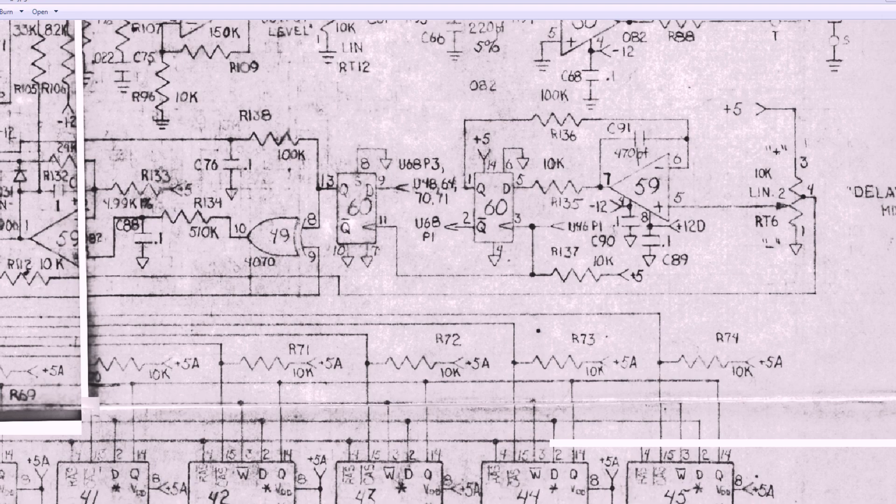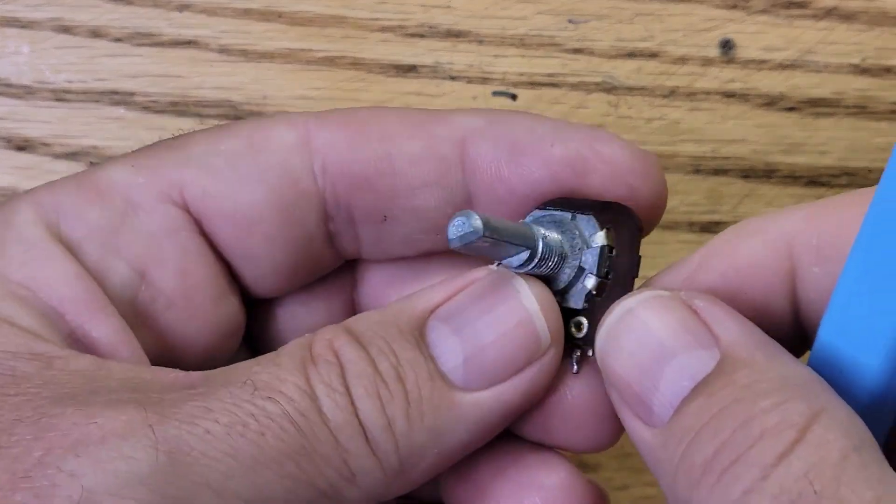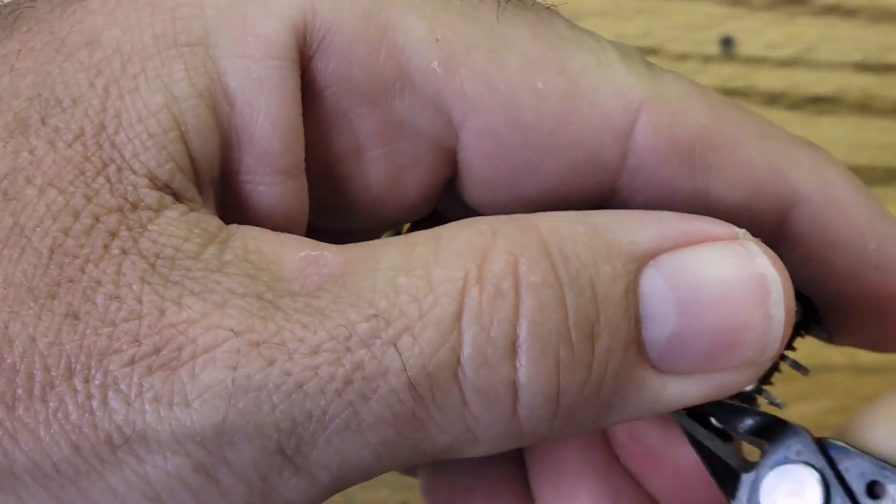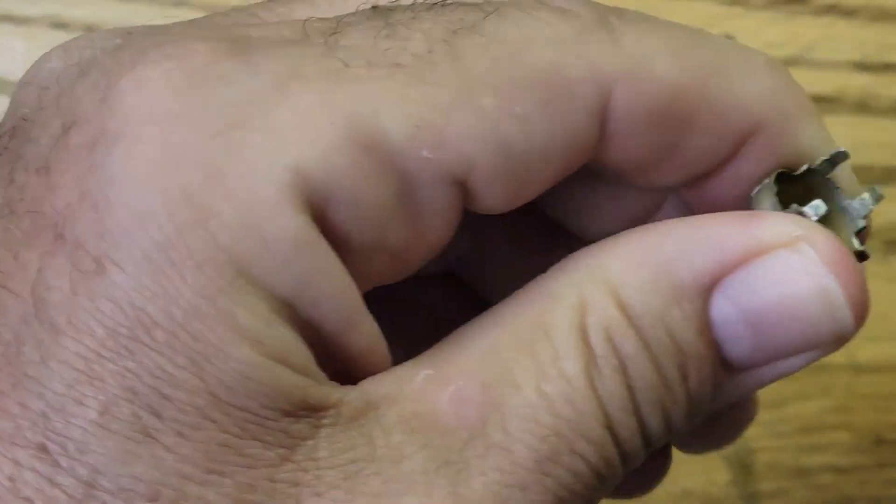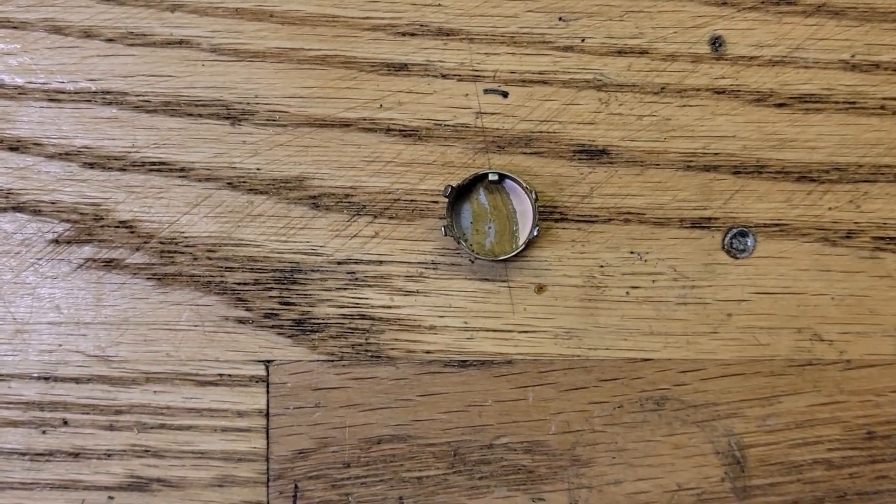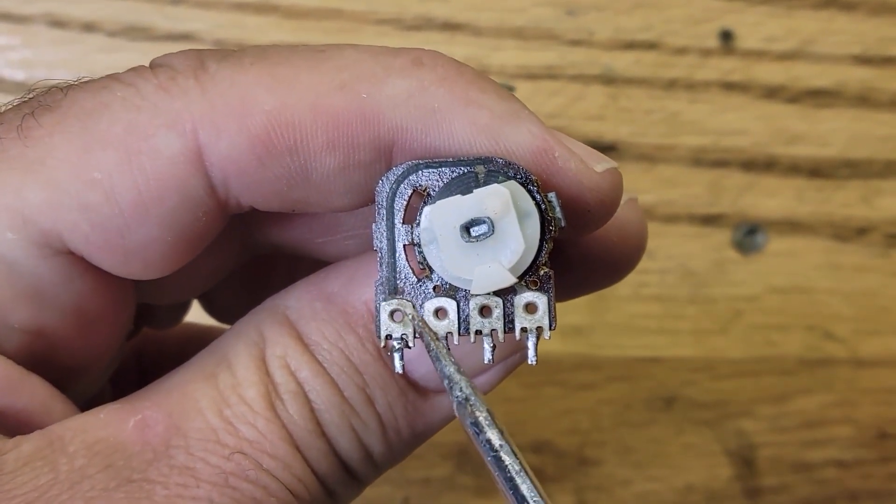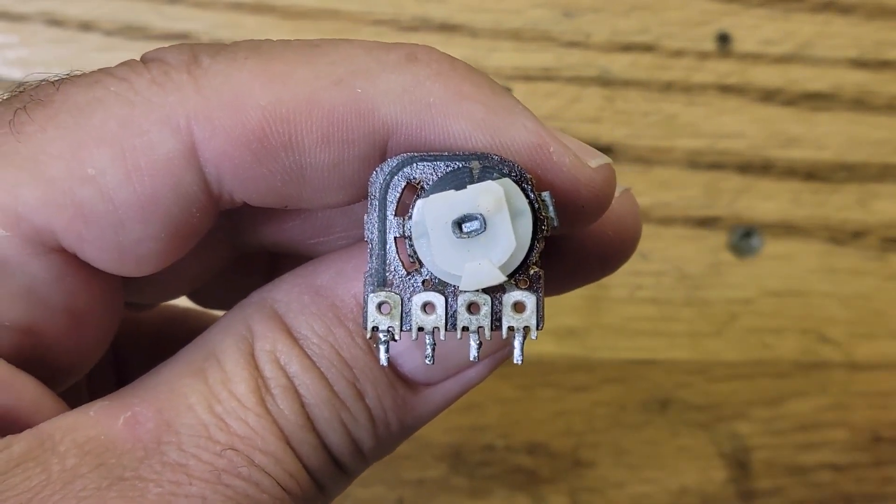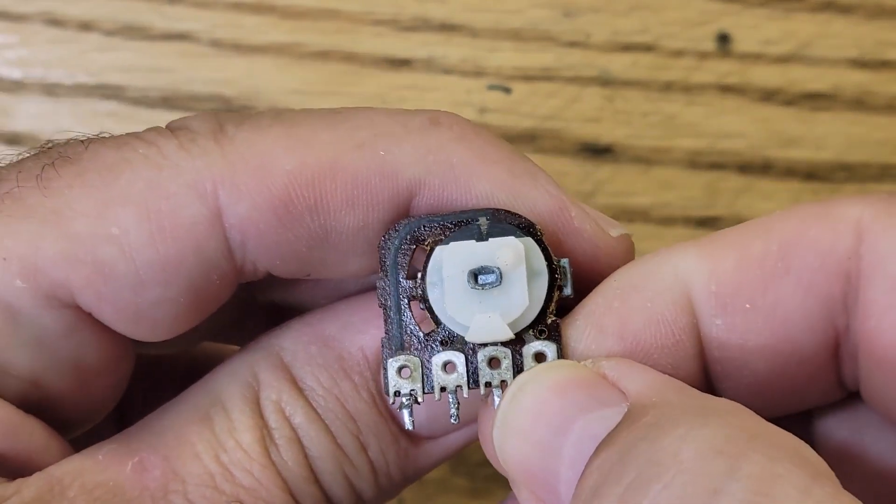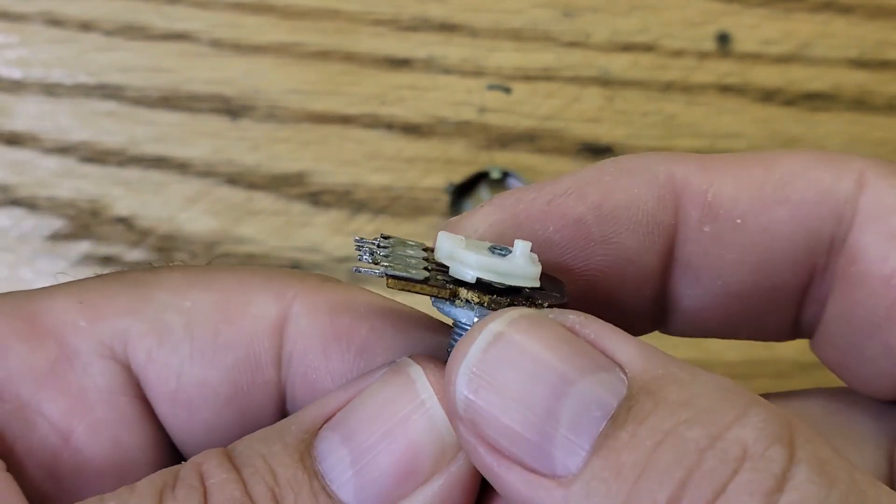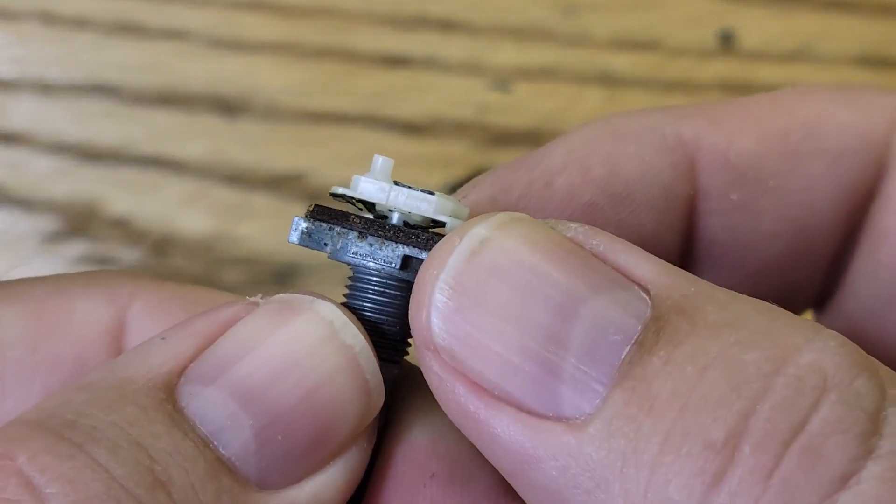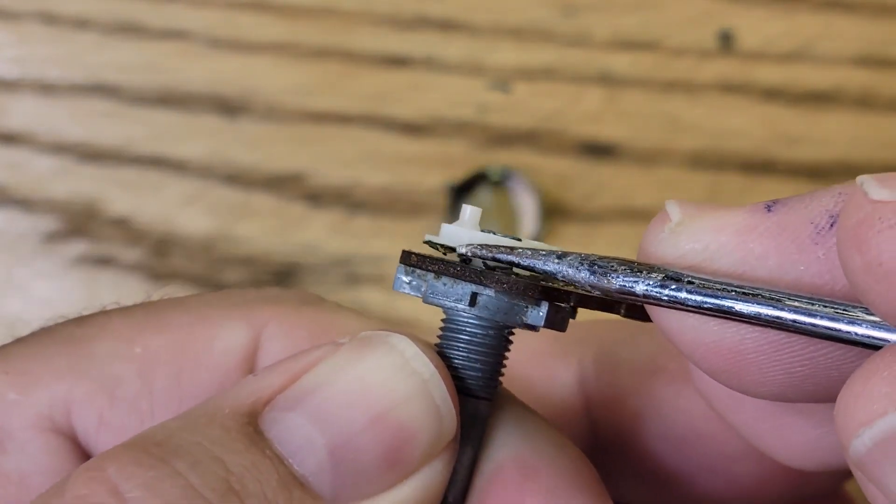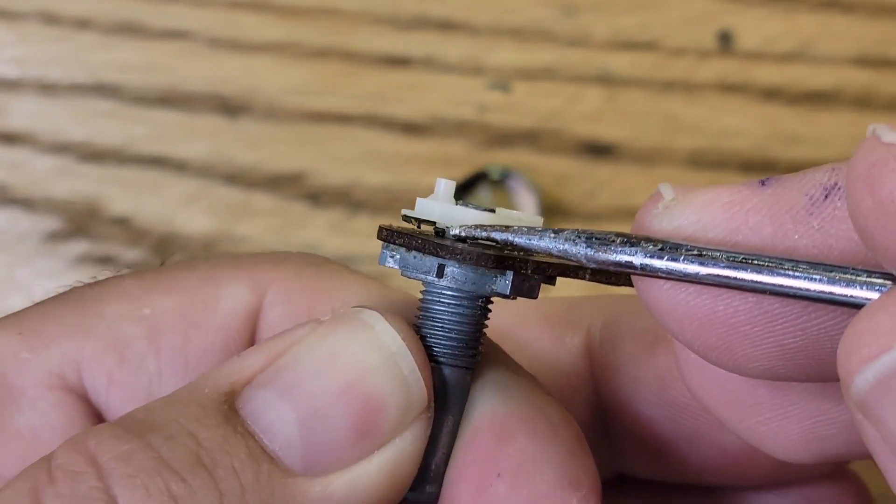All right, let's take apart the old broken one and let's see what we got. You can see this is the center tap, the last pin right here. It goes up and it goes right into the center of the carbon track. Yeah, look at that. The wiper is pretty much gone. It looks like it got rusted away and just fell apart.